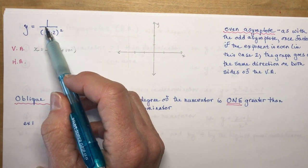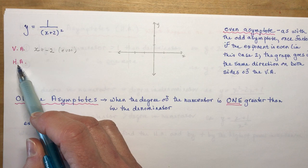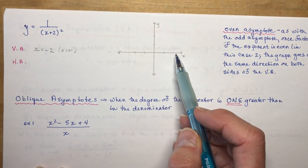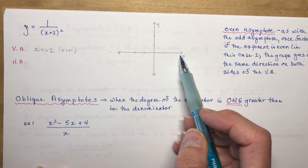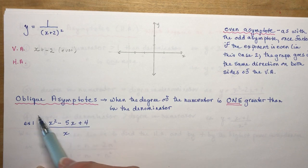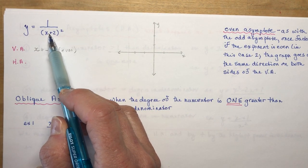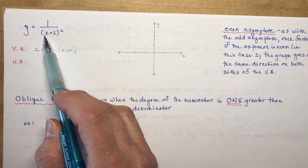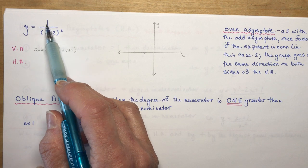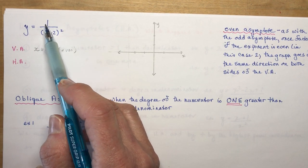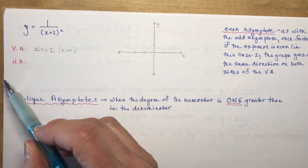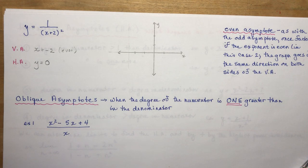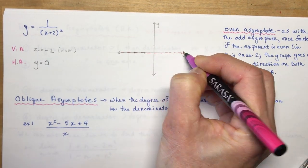What is the horizontal asymptote for 1/(x+2)²? When checking a horizontal asymptote, ask what happens as x gets very, very large. If I put in 100,000, I get 1 divided by (100,002)², which is 1 divided by a huge number — approaching 0. So the horizontal asymptote is y = 0.